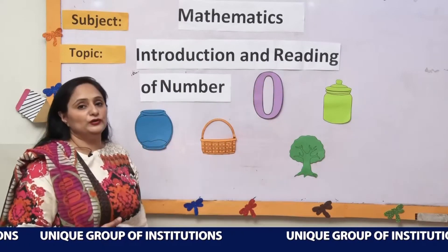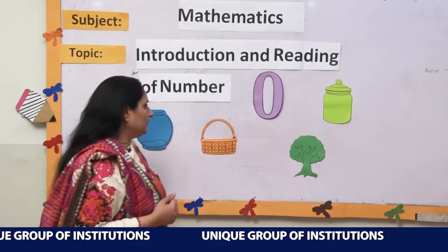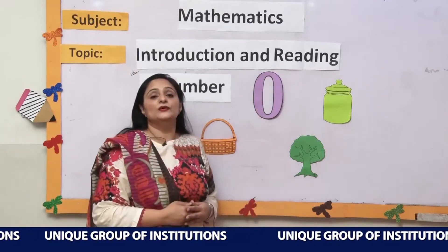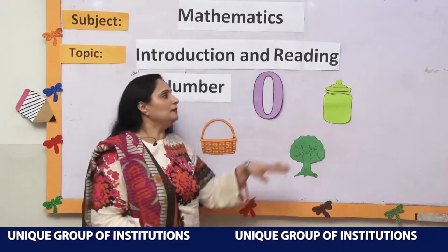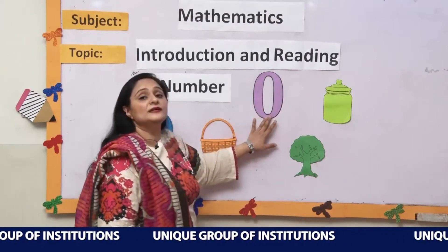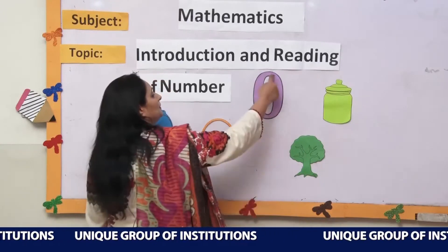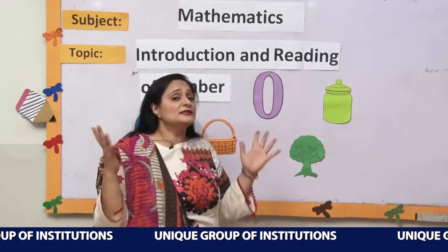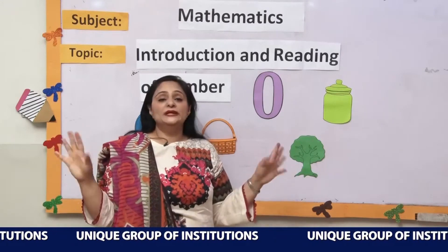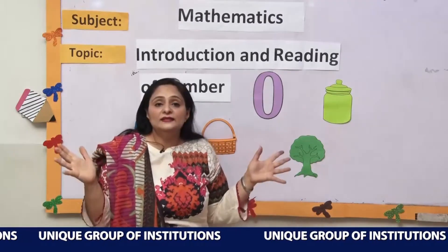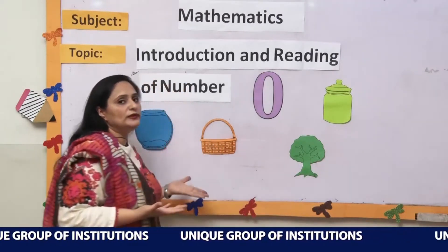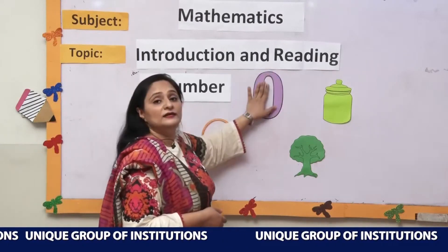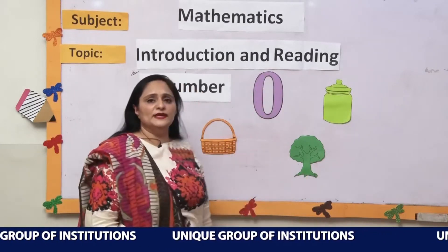0 is a new friend which I am going to introduce you today. This is 0, and 0 is a number. The name of this number is 0. This is number 0, and 0 means nothing. When there is no thing, that means there are 0 things.